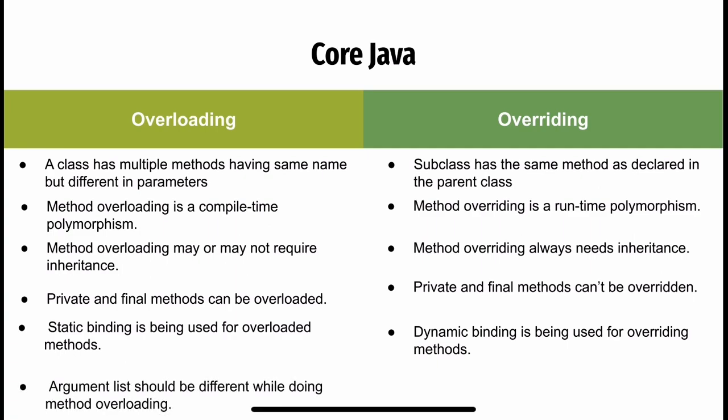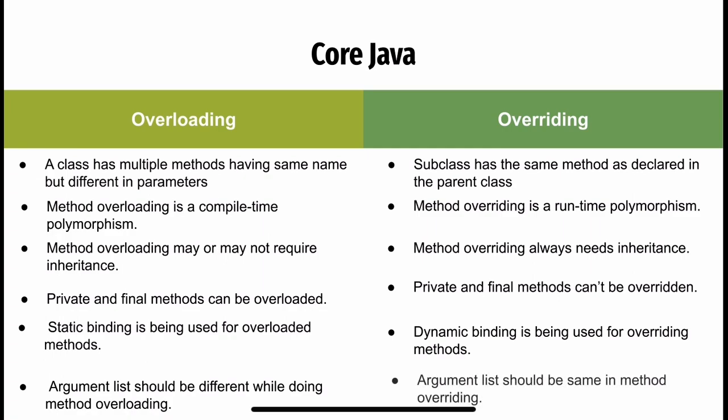The argument list should be different in method overloading, whereas the argument list should be the same in method overriding.